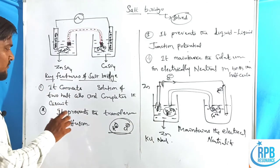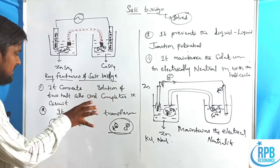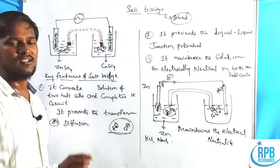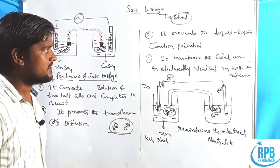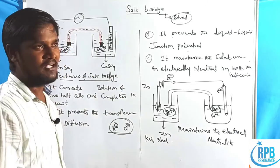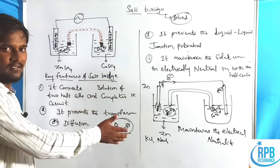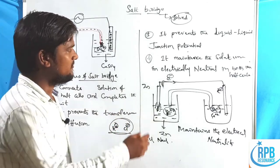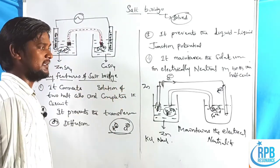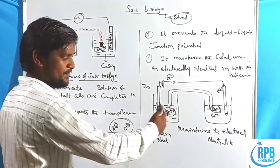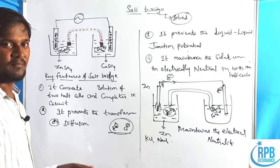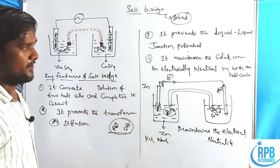The fourth feature — maintaining electrical neutrality — was explained through the half-cell experiments described in this video. That is all for the main content. Now let us solve a previous year CSR (CSIR) problem regarding the salt bridge.